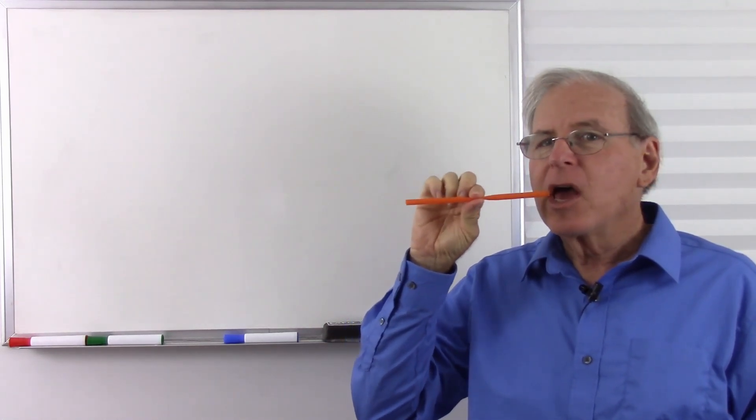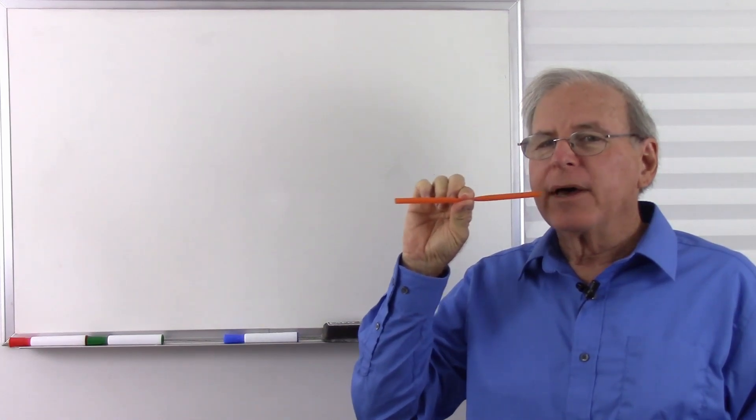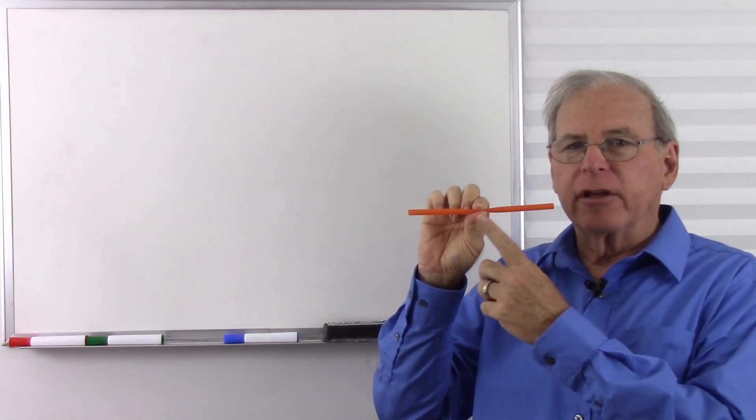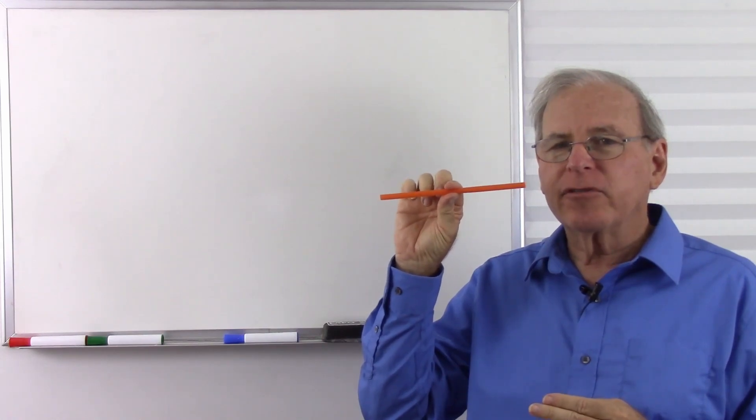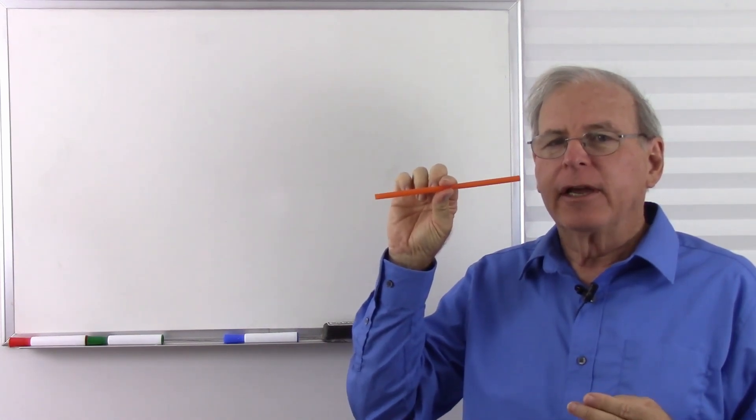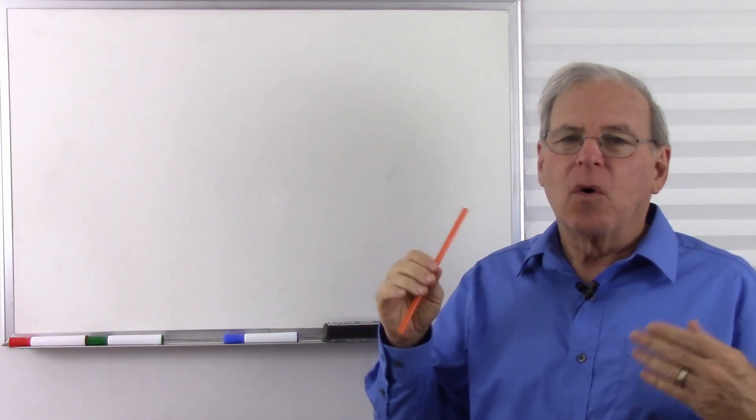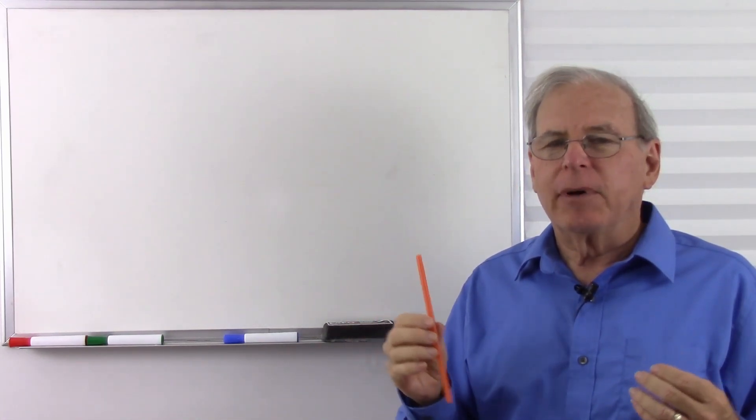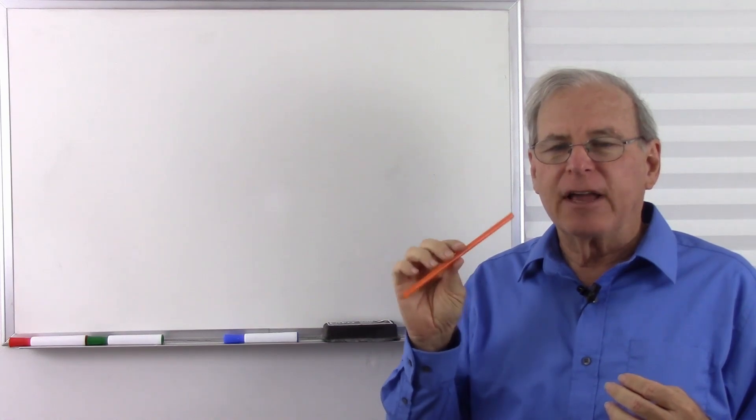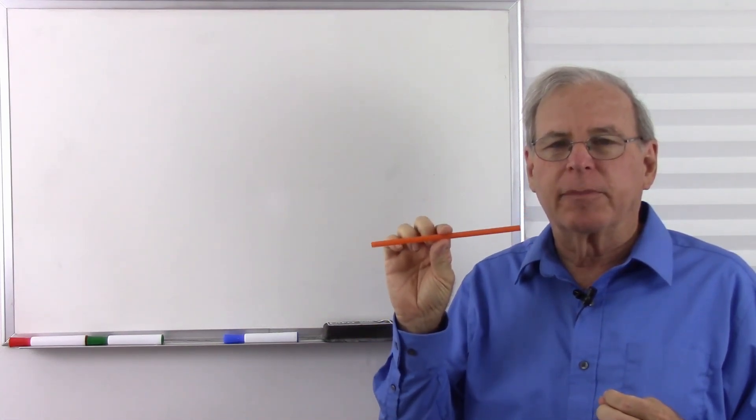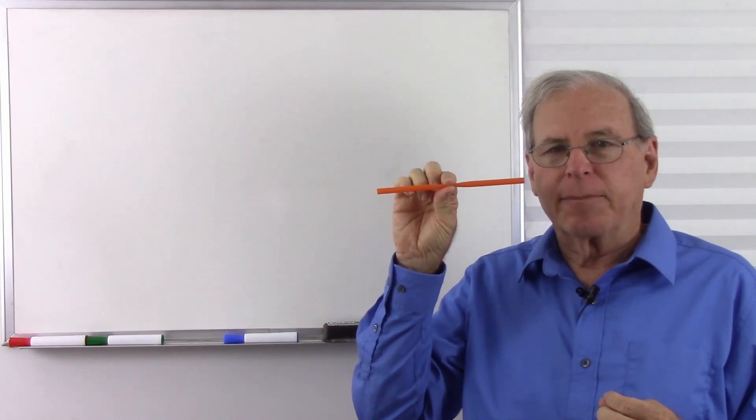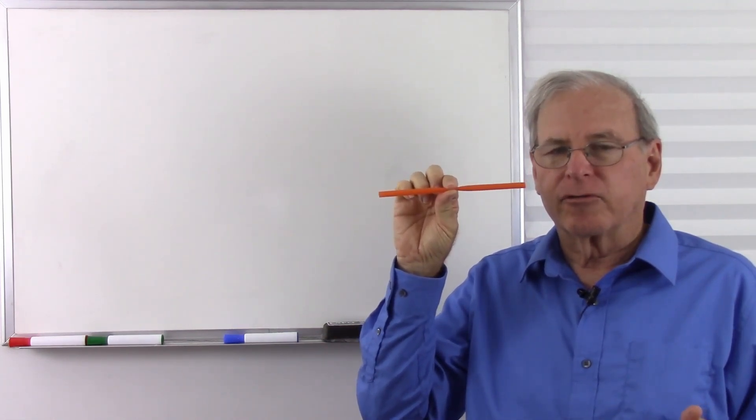But if I pinch it, the tighter I pinch it, the harder it is to blow air through, and that's how a resistor acts in a circuit or in a wire. A resistor acts as if it's a pinch in that wire. All wire has resistance, but a resistor is a device that puts a specific amount of resistance in a specific place in a circuit. So, once again, it's like pinching a soda straw.